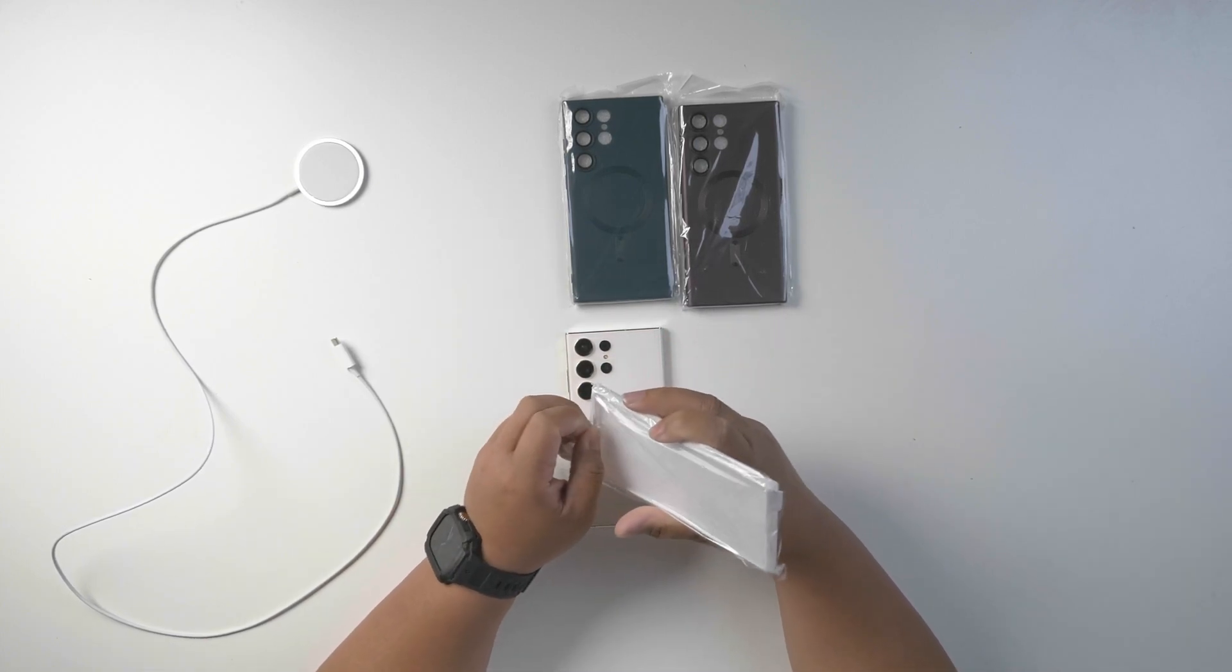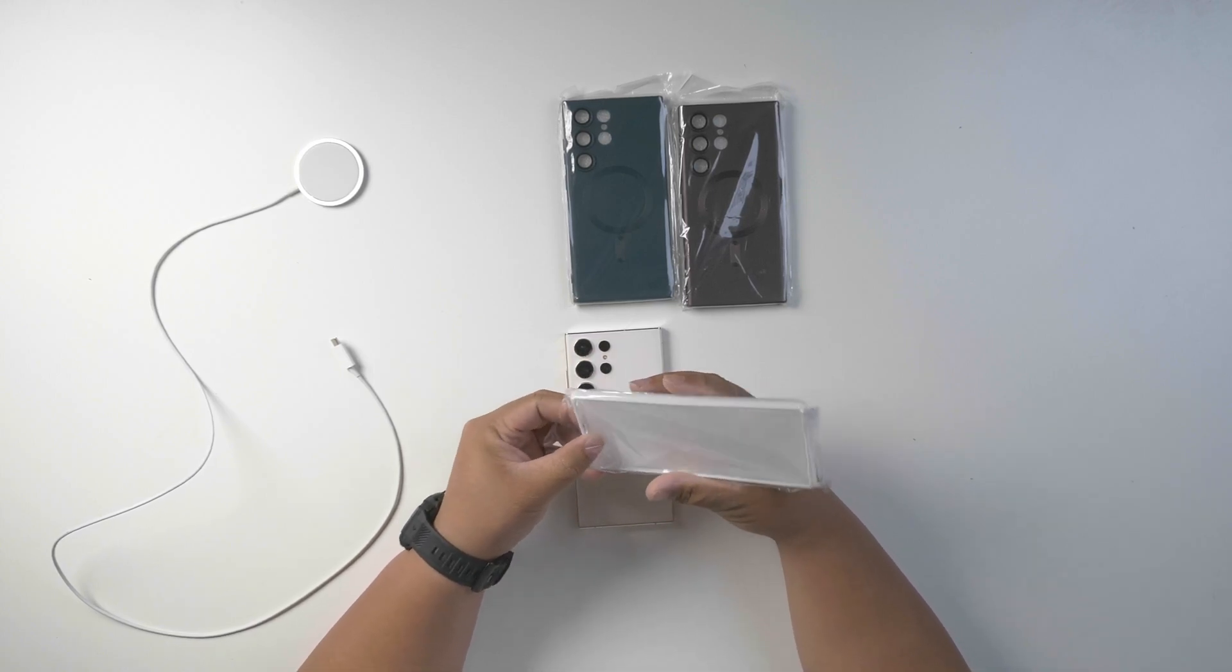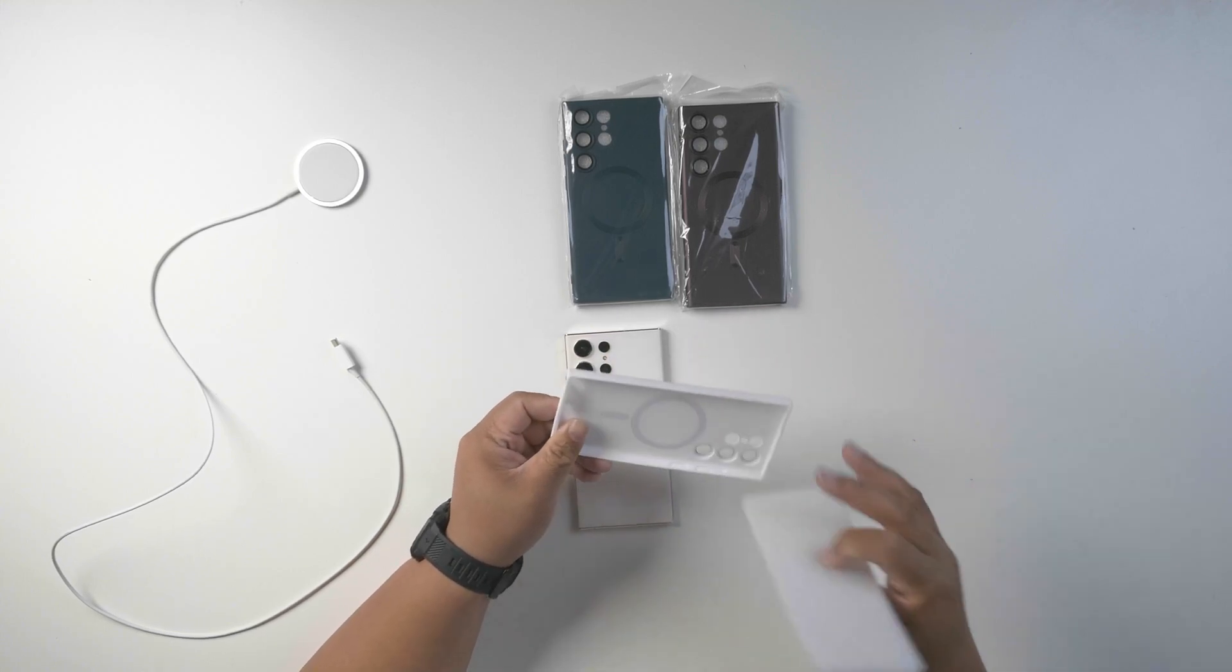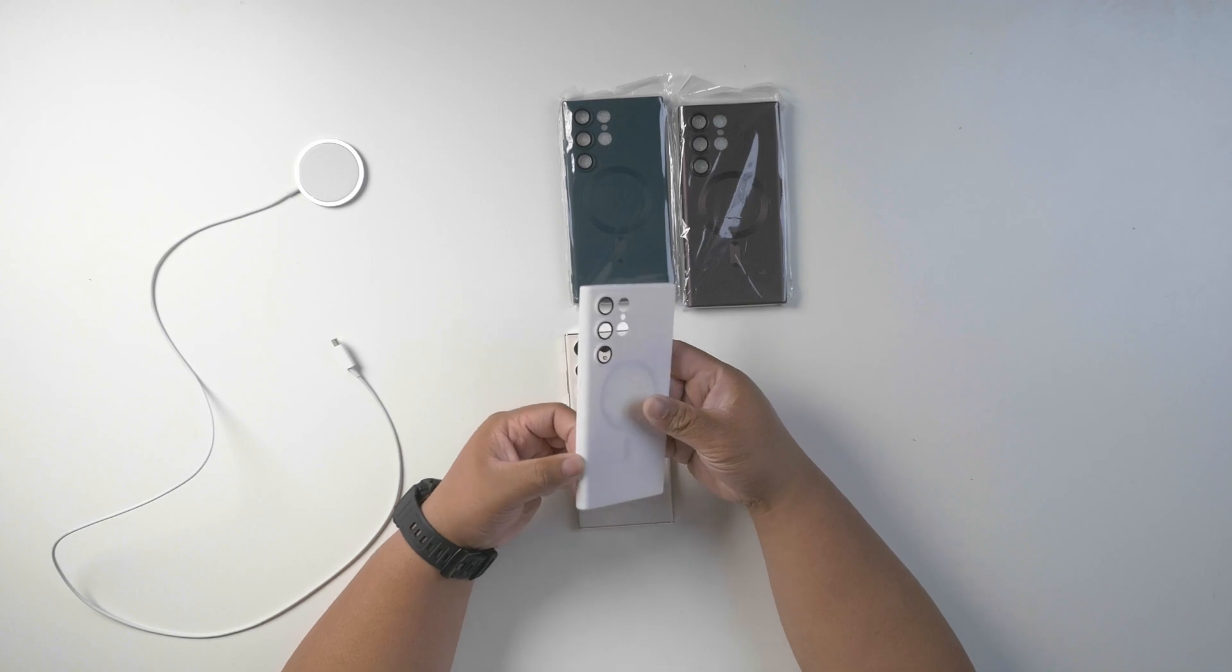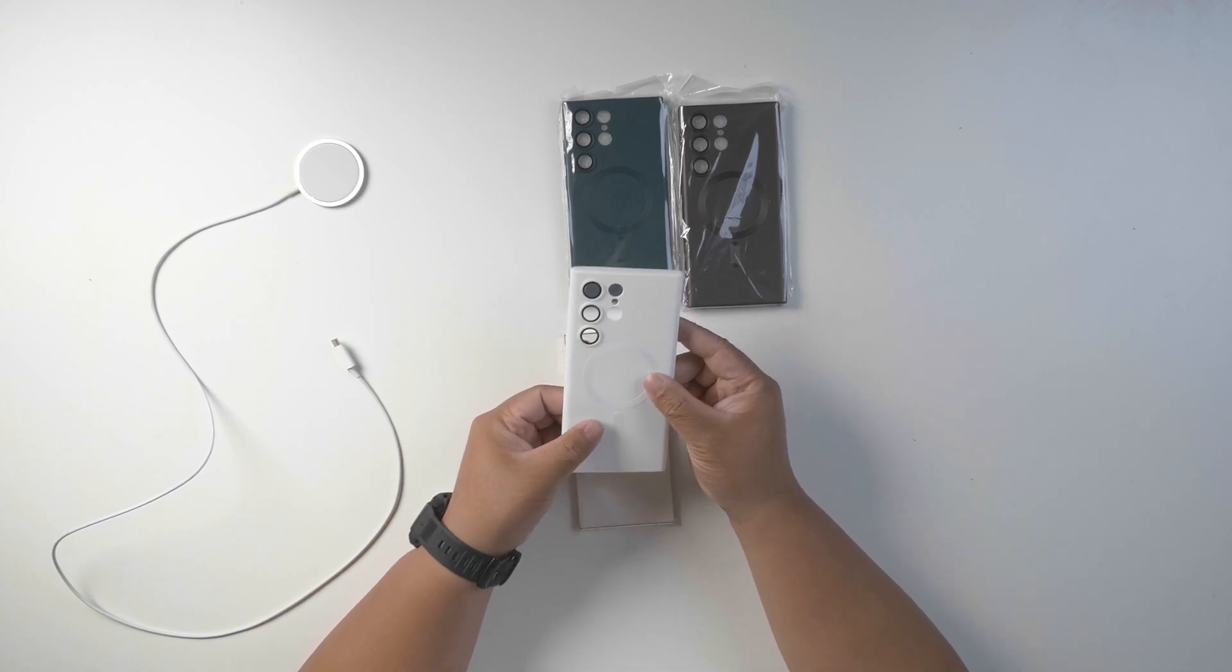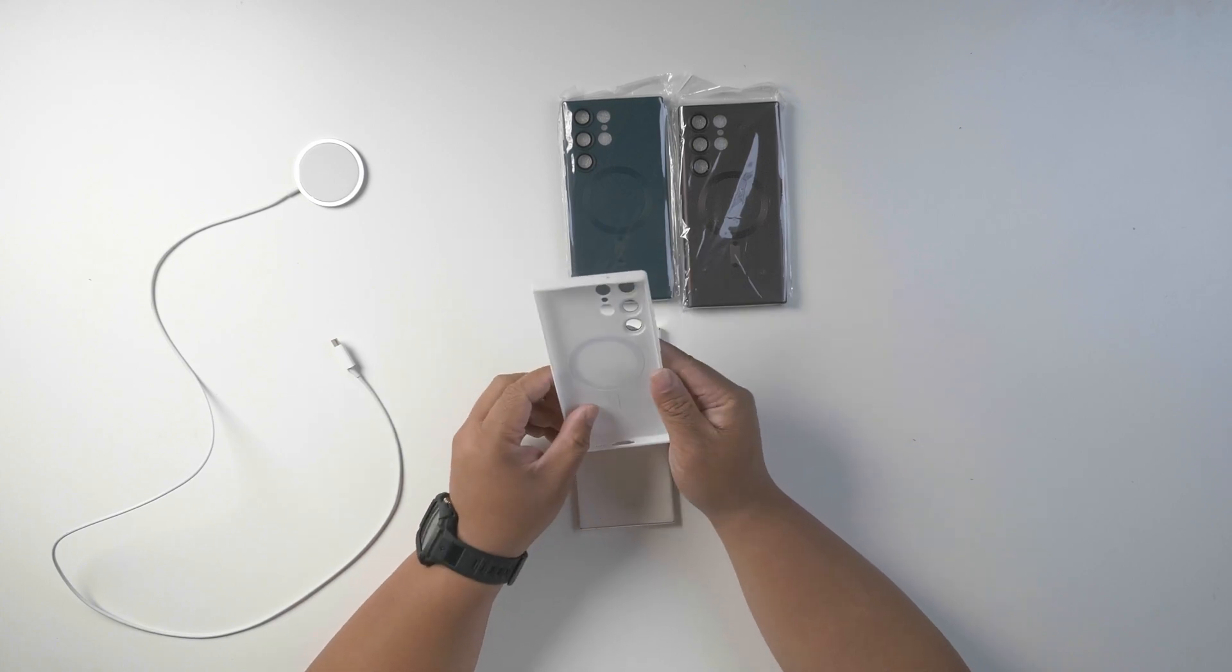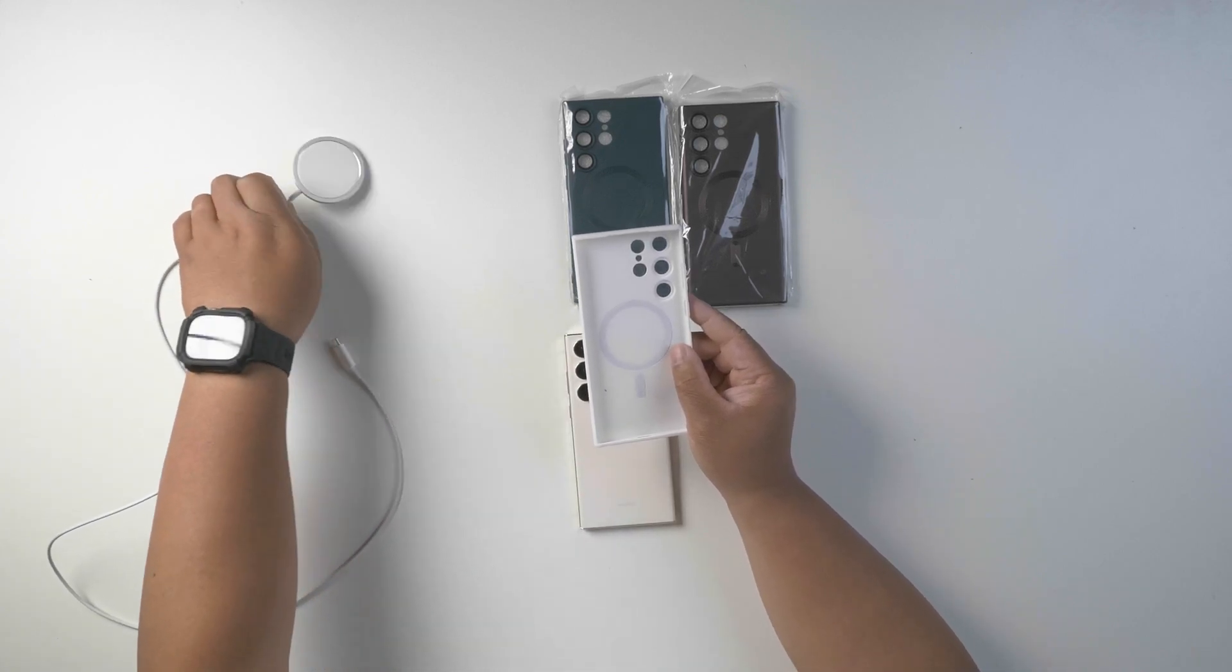Pretty much got these from Amazon and these are probably the only ones that I've seen that are clean looking. It's just a silicon case, nice protection all around. It has this magnetic circle and little thing on the bottom which is good for most MagSafe accessories that you could see out there.